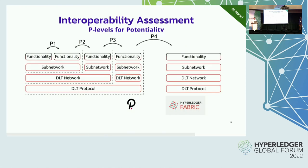Those are the P-levels. The intuition is that the higher the P-level, the stronger the interoperation system. For example, level P1 is interoperability across smart contracts. Level P3 is interoperation across different DLT networks with the same sub-networks and same functionality — so P3 could be across different Ethereum networks. Level P4 could be across different DLT protocols, such as Polkadot and Hyperledger Fabric, or Ethereum and Hyperledger Fabric.